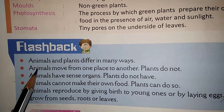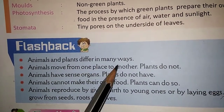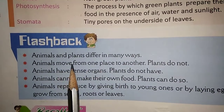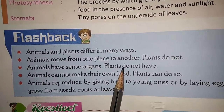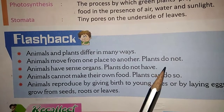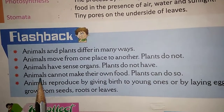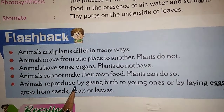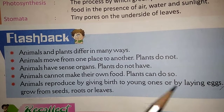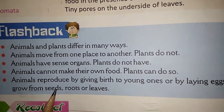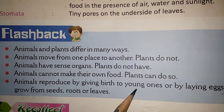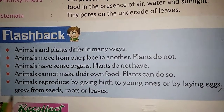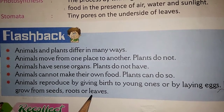Animals and plants differ in many ways. Animals move from one place to another; plants do not. Animals have sense organs; plants do not. Animals cannot make their own food; plants can. Animals reproduce by giving birth to young ones or by laying eggs. Plants grow from seeds, roots or leaves.